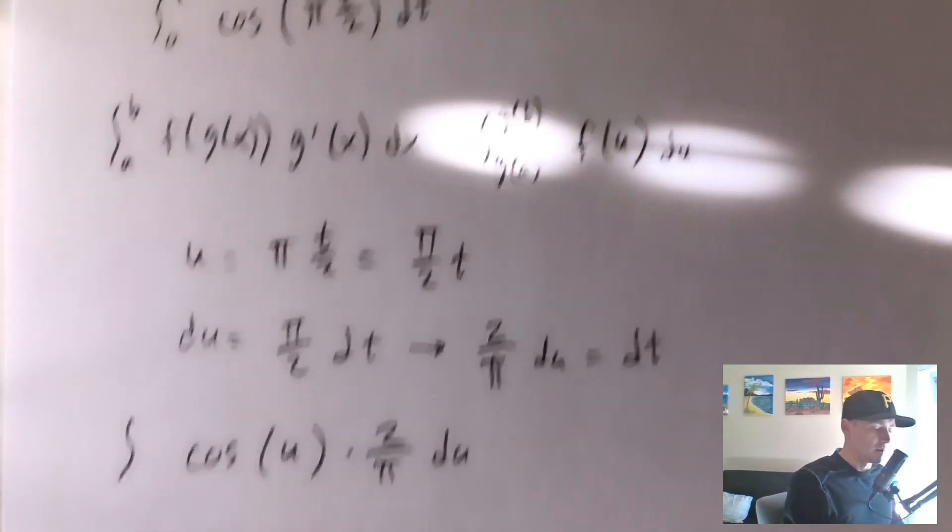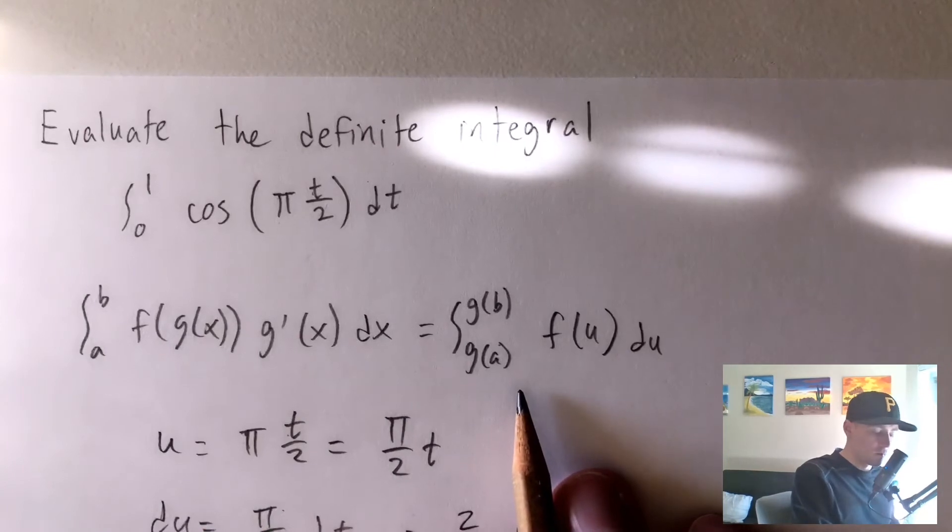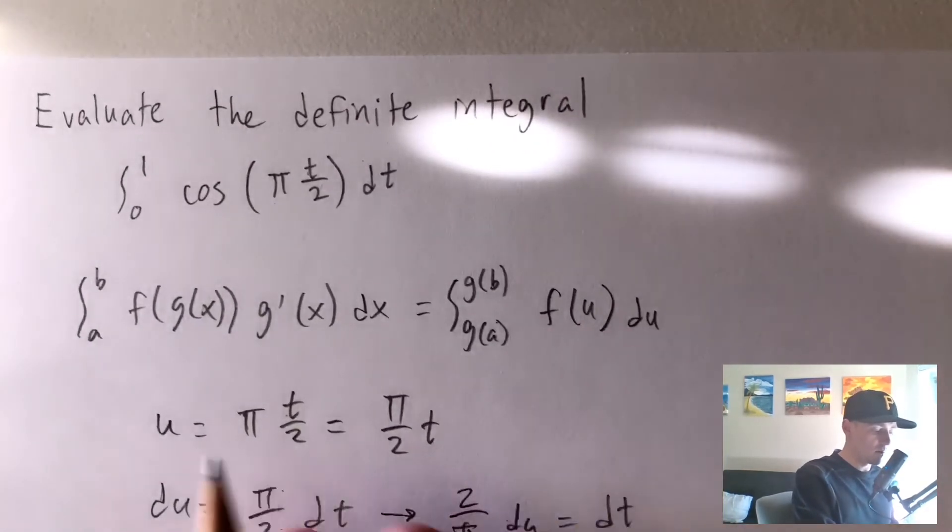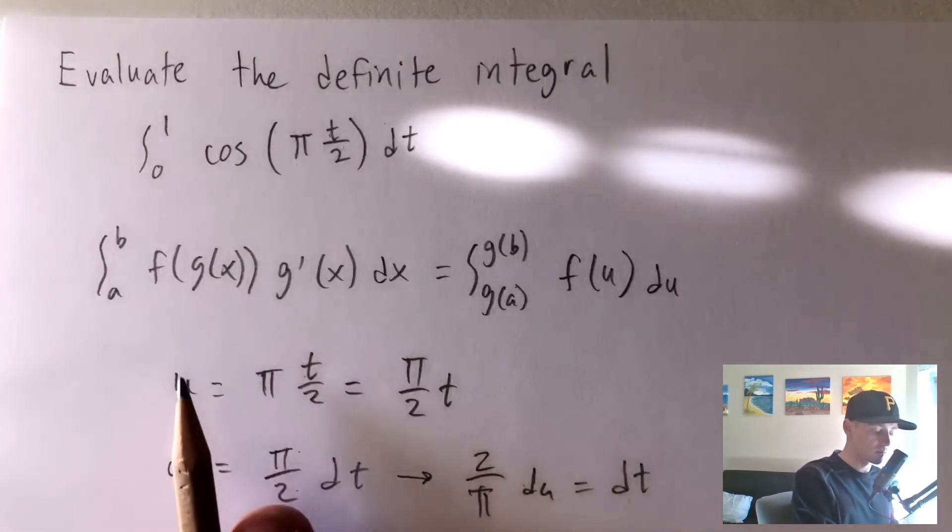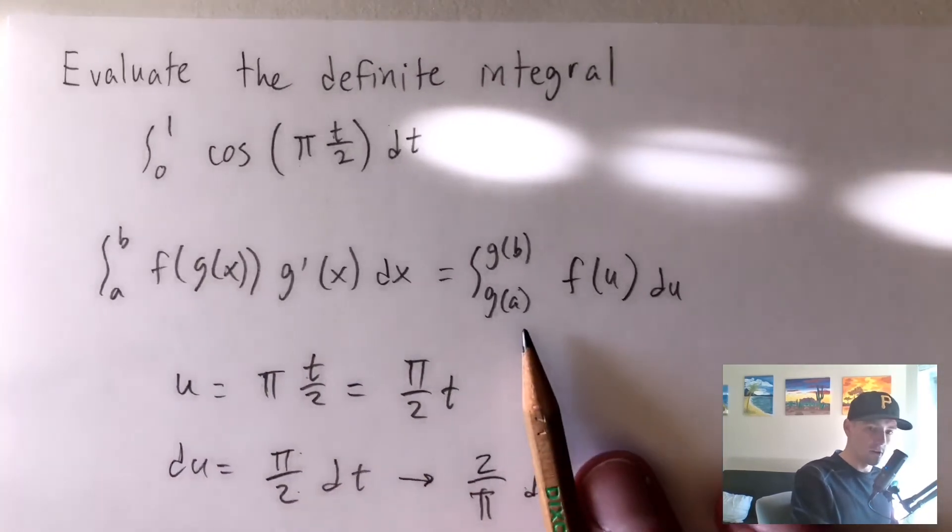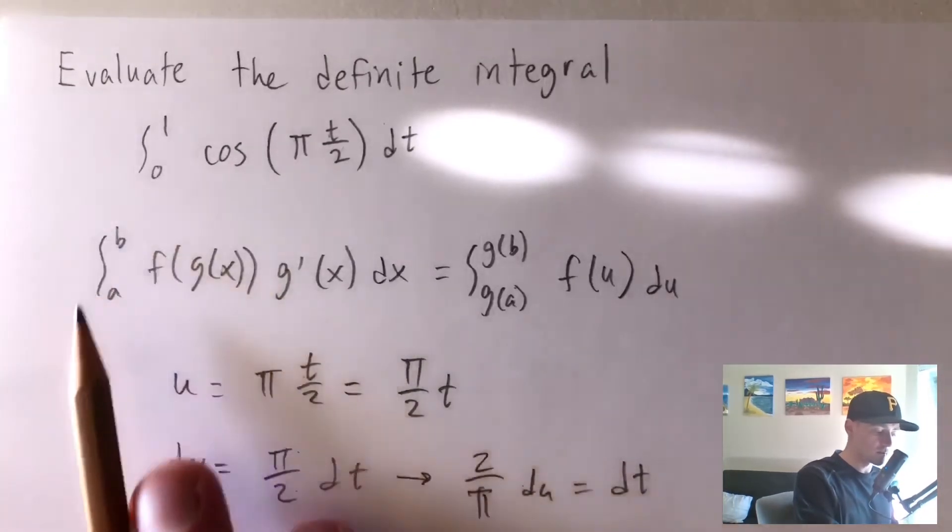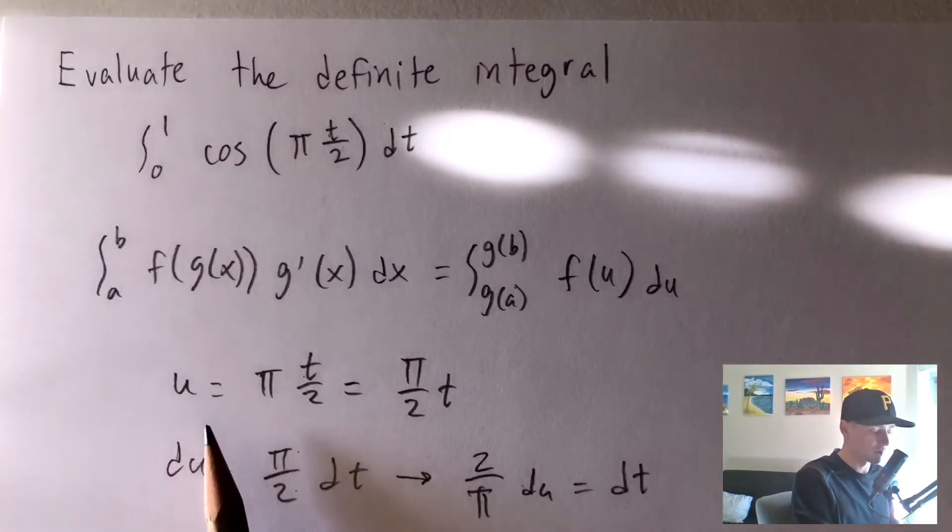So now the other piece we need to figure out is the bounds of our integral, right? This equation says that if we rewrite this, making the substitution u equals g of x, then to figure out our new bounds, we need to just plug our old bounds into our g of x function, which is what we just said u was.